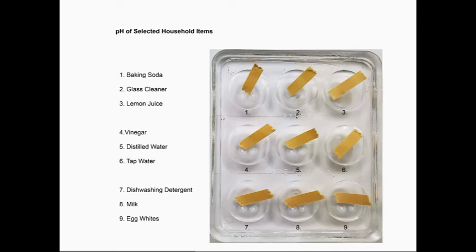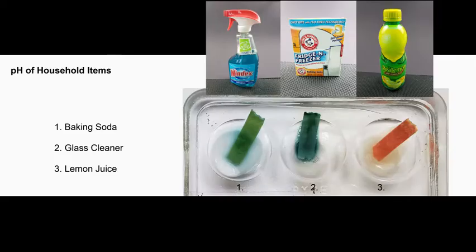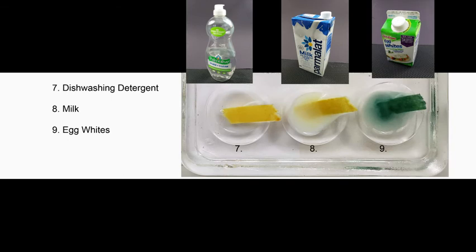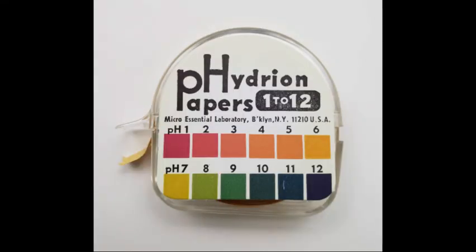Below is the pH of selected household items. Observe the pH scale: baking soda, glass cleaner, lemon juice, vinegar, distilled water, tap water, dishwashing detergent, milk, egg whites. Use the pH hydrogen ion indicator paper to measure and record the pH of selected household items.